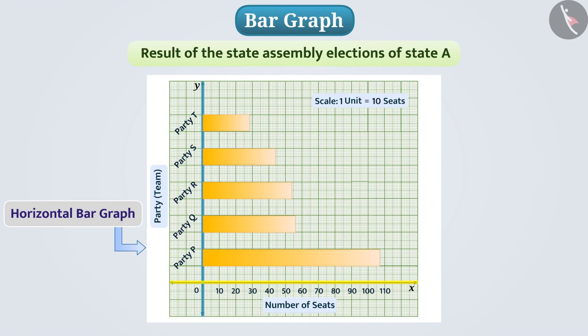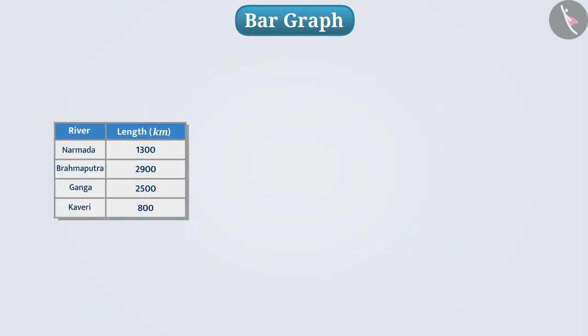Now, let us know how to draw a bar graph with the help of an example. The table shown here shows the lengths of some of the major rivers in India. Let's represent these data as a bar graph.